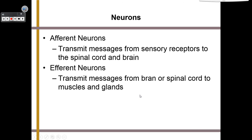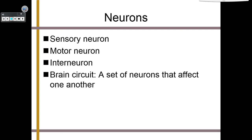There are two different kinds of neurons. They are either afferent neurons or efferent neurons. Afferent neurons send messages from your sensory organs or receptors to your brain and spinal cord. Efferent neurons transmit messages from your brain to muscles and glands. So afferent neurons send messages to the brain, and efferent neurons send messages from the brain.